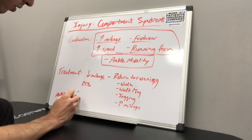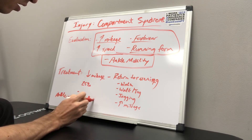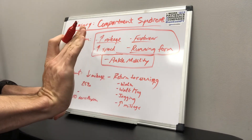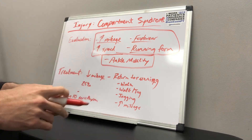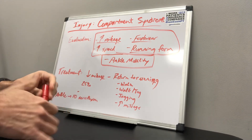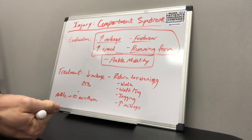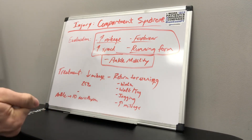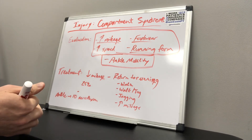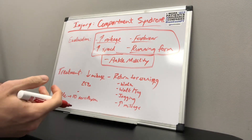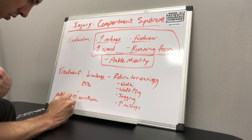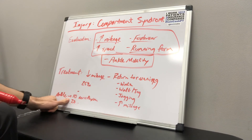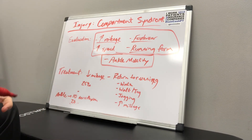Dorsiflexion is when you pull your toes up toward your shin — lifting your ankle upward. You need roughly 15 to 20 degrees of dorsiflexion in your ankle to run with good mechanics. She came in with only 10 degrees, which is less than needed. With time, we used joint mobilization to improve her dorsiflexion to 20 degrees, which allowed for better running mechanics and freed up that joint to move better.